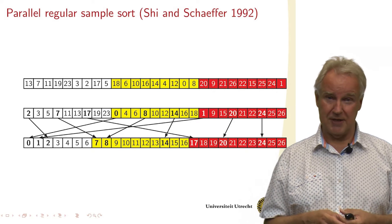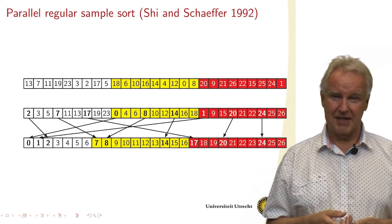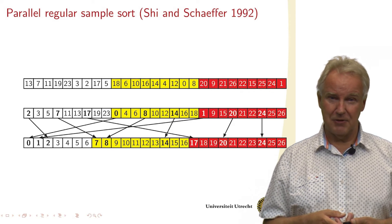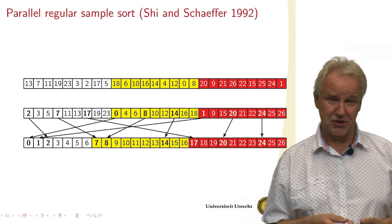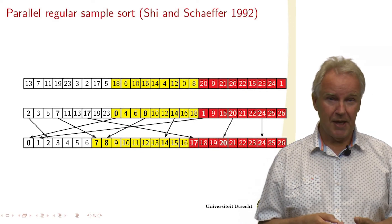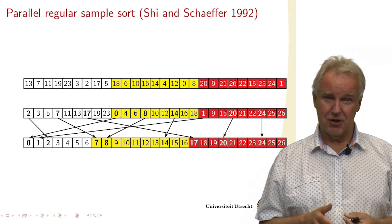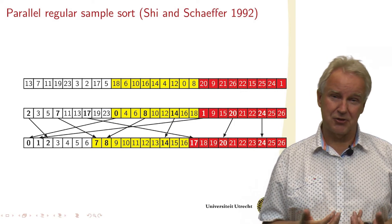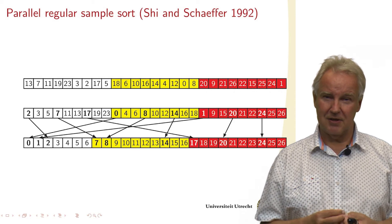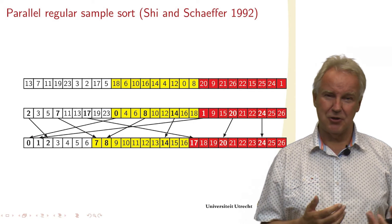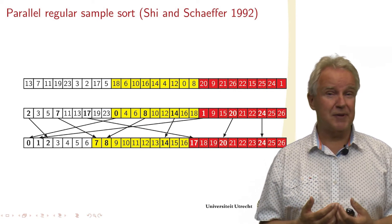The basic idea is: first, sort the local values. We can use any known sequential sorting algorithm, like quicksort. Then we take samples — one of the elements — and since we already sorted them, we can do this at regular intervals, in this case at a step size of three. So we take elements at positions 2, 7, and so on from the first processor, and do the same on every processor. In this case every processor has three samples, so altogether we have nine samples.